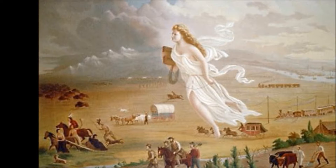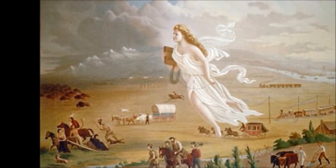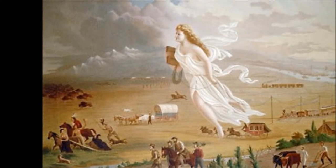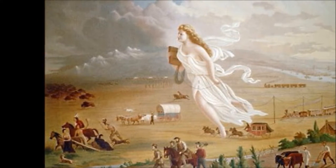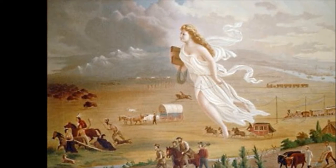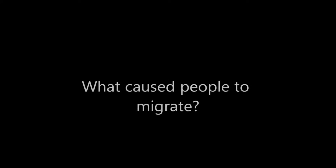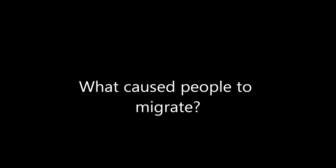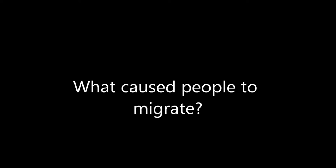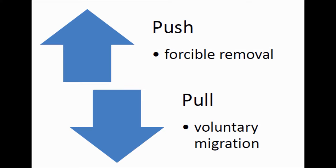This land was soon settled by American farmers, ranchers, and entrepreneurs. When discussing the migration across the United States and its territories, we will categorize groups as being pushed or pulled across the continent. Those who were pushed were forced to move west, such as the Native Americans. Those who were pulled voluntarily migrated west in search of riches and better opportunities.